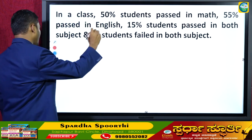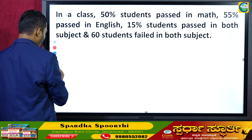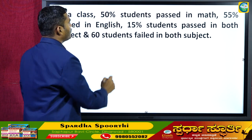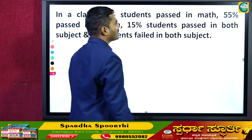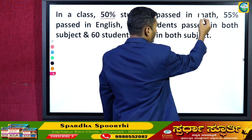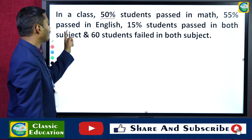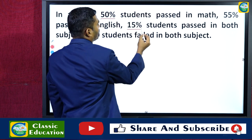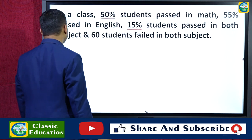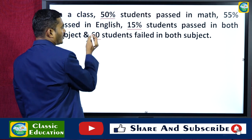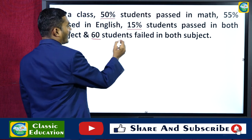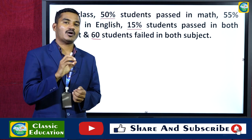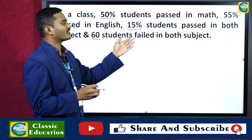Two-parameter basic question first, then we will discuss the question from the examination. In tomorrow's class also the same thing — three parameters basic first, then the exam problem. Now, what the basic question is telling me: in a class, 50% of the students have passed in maths, 55% of the students have passed in English, 15% of the students have passed in both subjects, and 60 students have failed in both subjects.